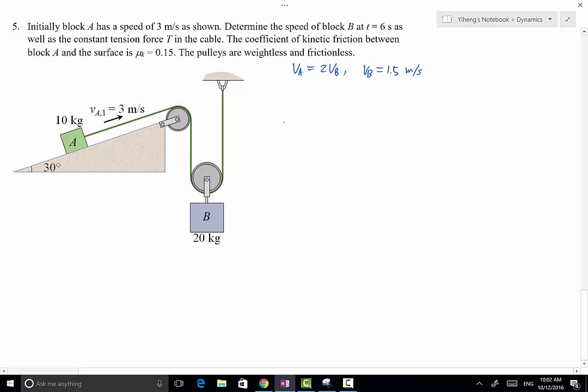We start with block A. If we do a free body diagram, it's subjected to its own weight, that is Mg, 10 times 9.81, which is 98.1 newton, normal force, and tension force T, and the frictional force in this direction. Because there's no motion along this Y' direction, therefore from there we can solve for N. Normal force equals weight times cosine 30 degree, which equals 84.96 newton.